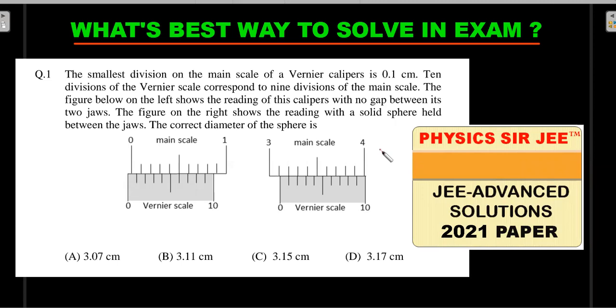Here I go with the formal wording of the question. The smallest division on the main scale of a vernier calipers is 0.1 centimeters. Ten divisions of vernier scale correspond to nine divisions of the main scale. The figure below on the left shows the reading of this calipers with no gap between its two jaws. The figure on the right shows the reading with a solid sphere held between the jaws.